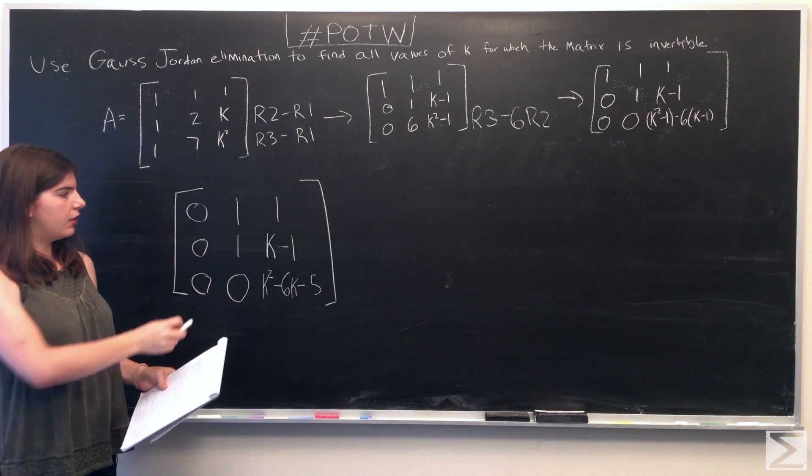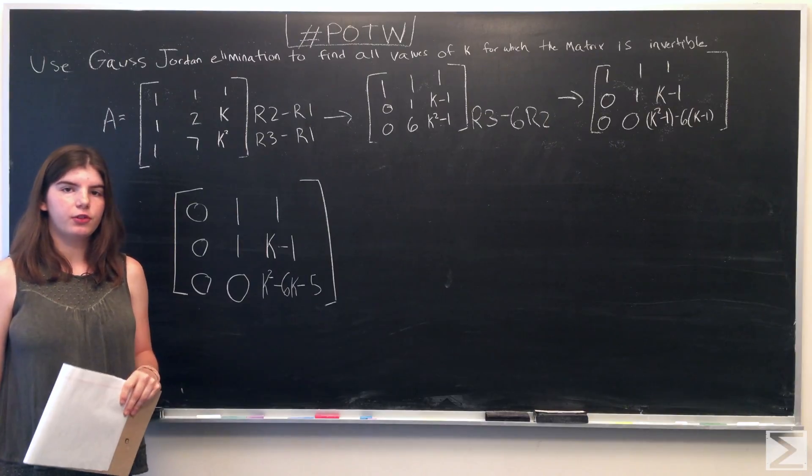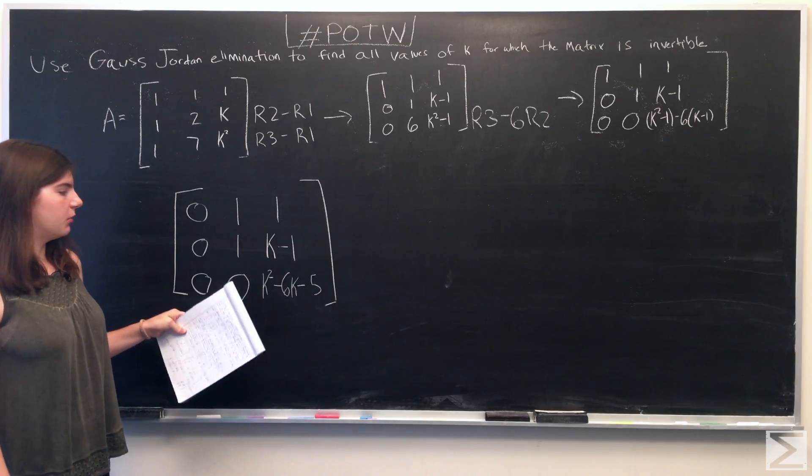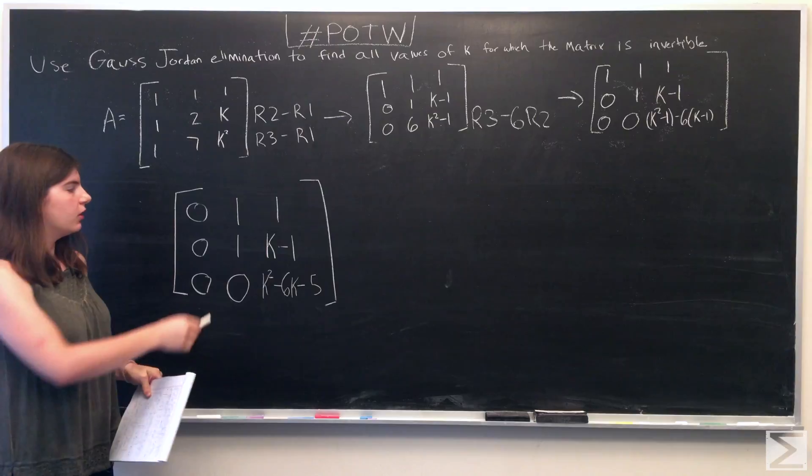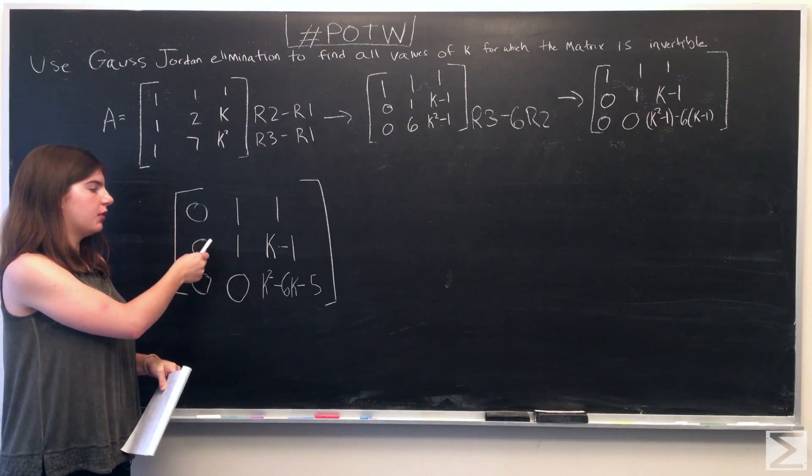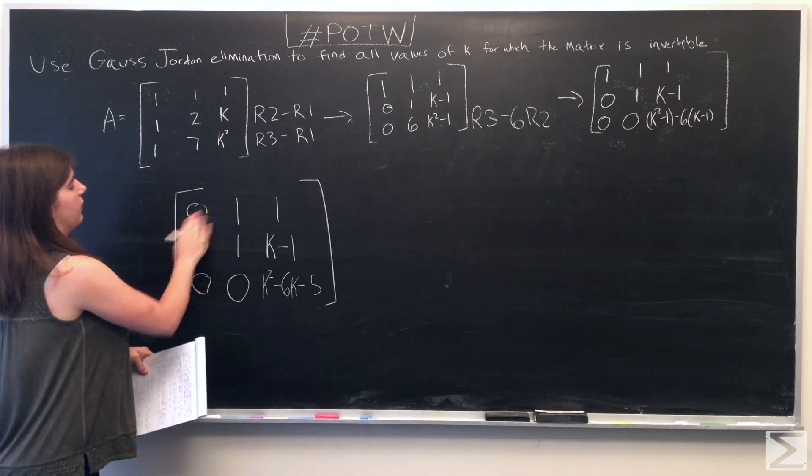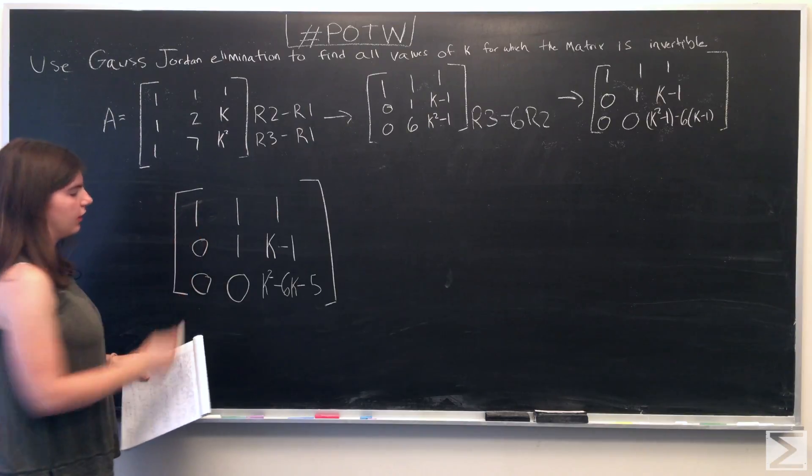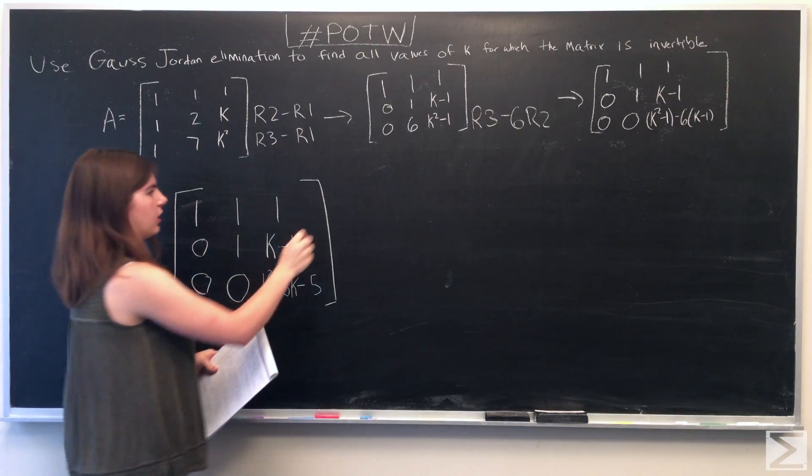So now we have the matrix in upper triangular form, and we can find the determinant. And the determinant is equal to the product of the entries in the diagonal.